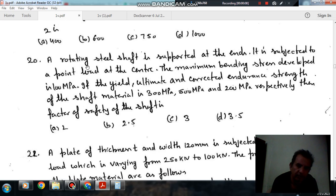Question number 20. A rotating steel shaft is supported at the ends. It is subjected to a point load at the center. The maximum bending stress developed is 100 MPa. If the yield, ultimate, and corrected endurance strength of the shaft metal is 300 MPa, 500 MPa, and 200 MPa respectively.